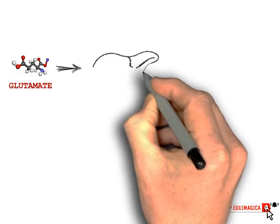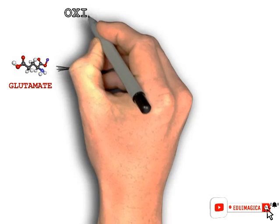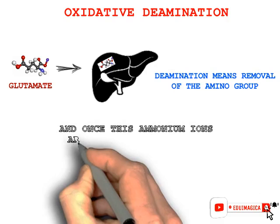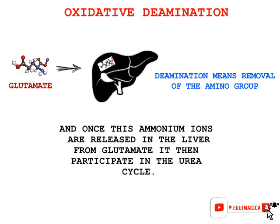When the glutamate reaches the liver, it undergoes the second step, known as oxidative deamination. As the name suggests, deamination means removal of the amino group. Glutamate is the only amino acid which undergoes deamination to a significant extent. The ammonia is liberated into the mitochondria of the liver, which is then taken for the urea cycle.